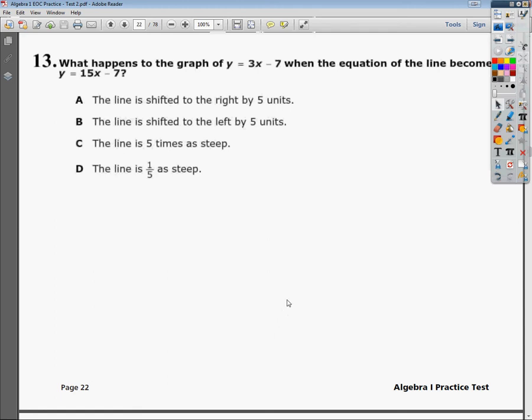This is the Tennessee End of Course Algebra Practice Test number 2, question number 13. What happens to the graph y equals 3x minus 7 when the equation of the line becomes y equals 15x minus 7?